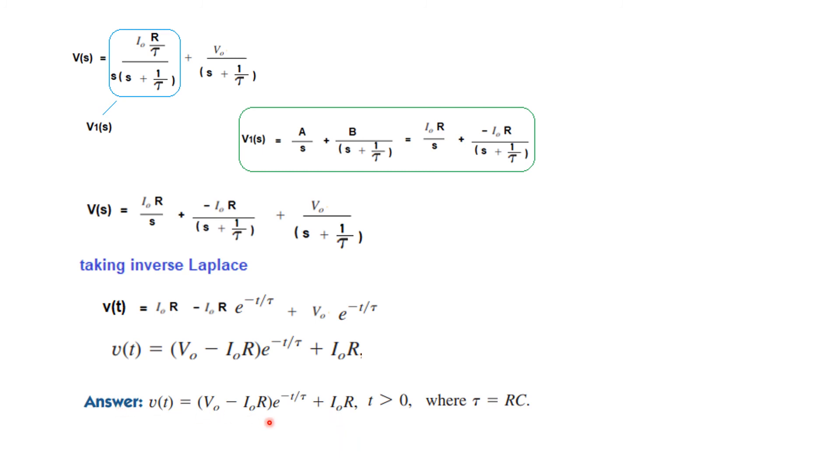The answer in the book is V(t) equals V0 minus I0R e^(-t/tau) plus I0R for t greater than 0, where tau equals RC. I hope this gives you an understanding. If you follow these steps gradually, you will be able to solve any type of question. Please give me your comments and share this with your friends. Thank you.